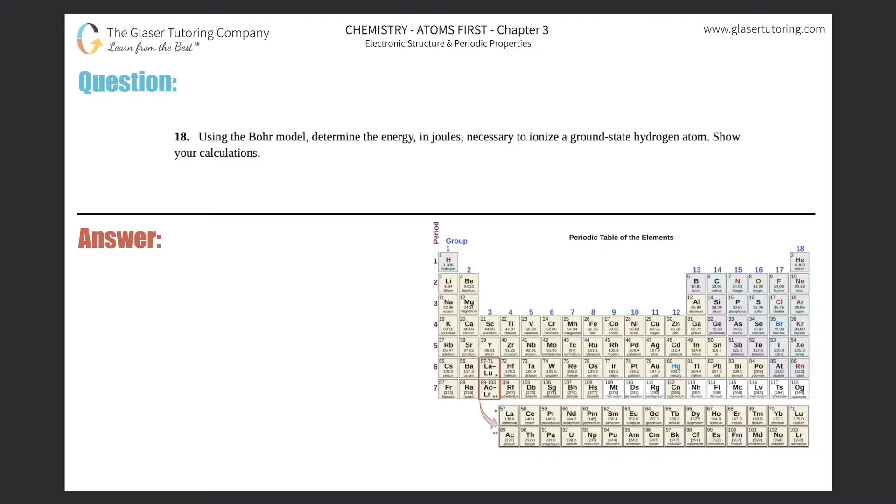Number 18. Using the Bohr model, determine the energy in joules necessary to ionize a ground state hydrogen atom. Show your calculations.